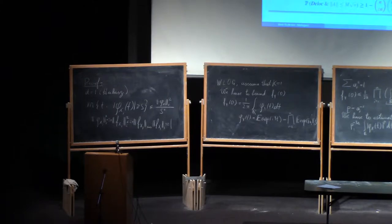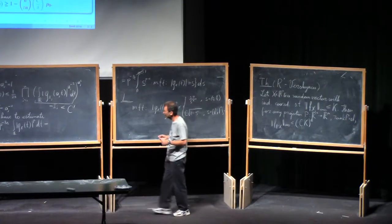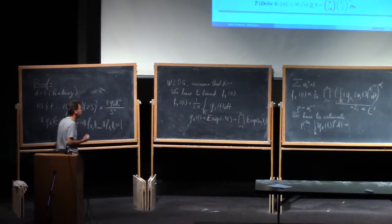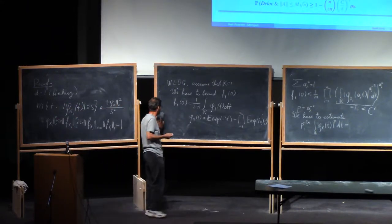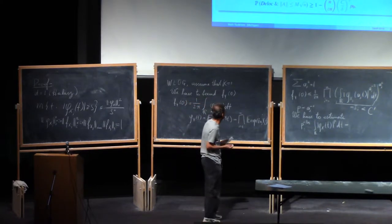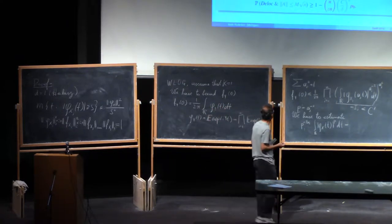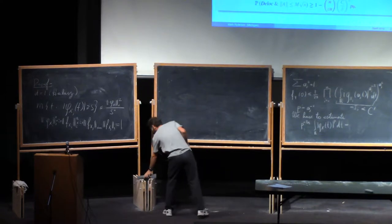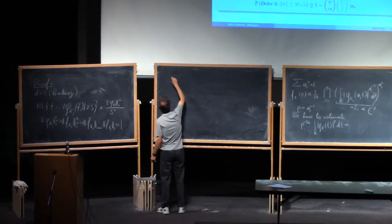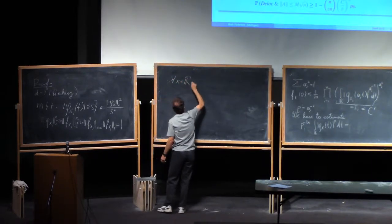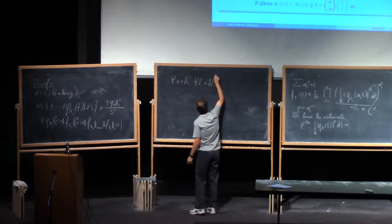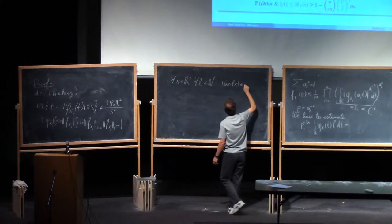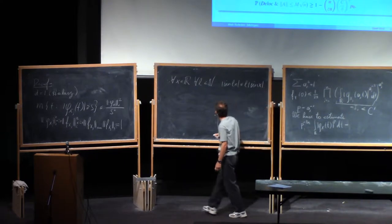The proof of the main part is also very simple but it required an idea, and this idea belongs to Halas who turned it into a powerful method of proving small ball probability estimates. In this case with continuous density it's absolutely elementary. So let me show you this idea. We will use a calculus inequality that for any x real and for any L natural, the absolute value of sine L x is less or equal than L absolute value of sine x.